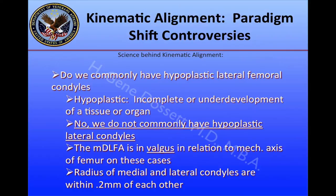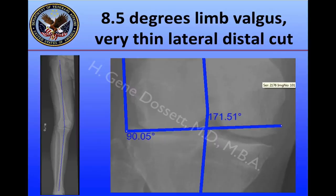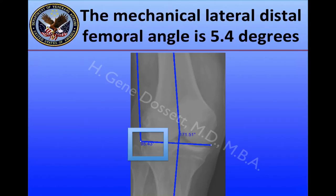The mechanical distal lateral femoral angle is in valgus in relation to the mechanical axis of the femur. The radius of the medial and lateral condyles, as Dr. Howell showed, are within 0.2 millimeters of each other. For example, in a patient with 8.5 degrees of limb valgus, if we cut the femur at 90 degrees to the mechanical axis, there is a substantial cut on the medial distal femoral condyle and a very thin lateral distal cut. The lateral distal femoral angle is actually 5.4 degrees — the condyle is not hypoplastic, it simply is in a different plane than what we are used to cutting at 90 degrees.